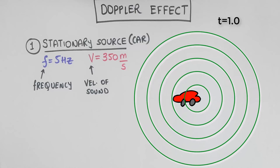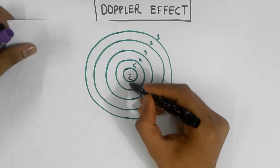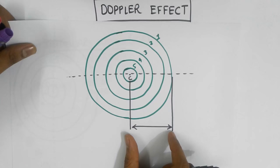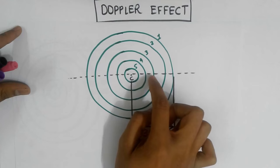So this is a static picture of the situation after 1 second. This is the distance traveled by the first wave in 1 second. So the speed of the sound is 350 meters per second. This distance must be 350 meters.